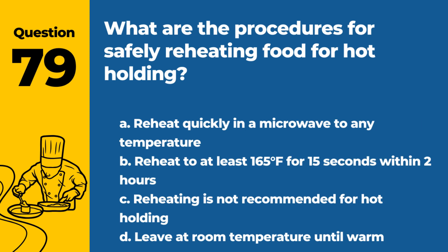Question 79. What are the procedures for safely reheating food for hot holding? A. Reheat quickly in a microwave to any temperature. B. Reheat to at least 165°F for 15 seconds within 2 hours. C. Reheating is not recommended for hot holding. D. Leave at room temperature until warm. Answer: B. Reheat to at least 165°F for 15 seconds within 2 hours to ensure it's safe to eat.